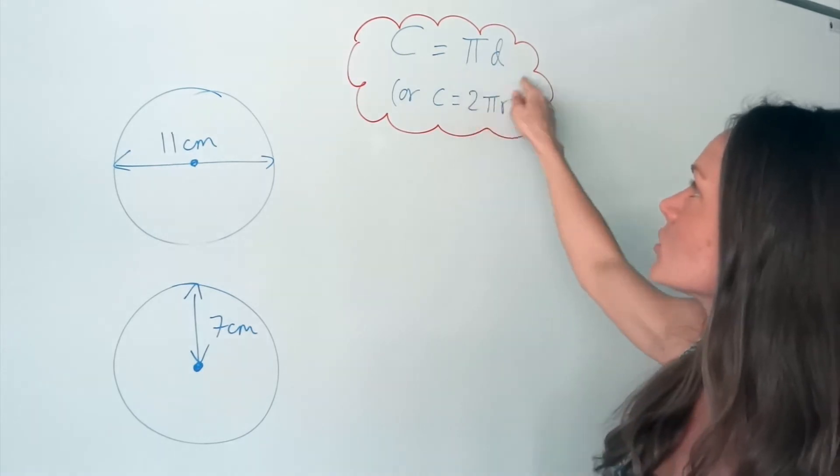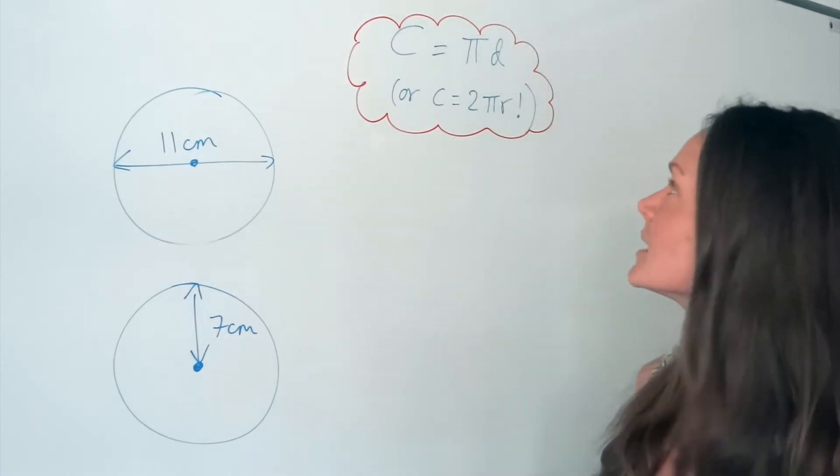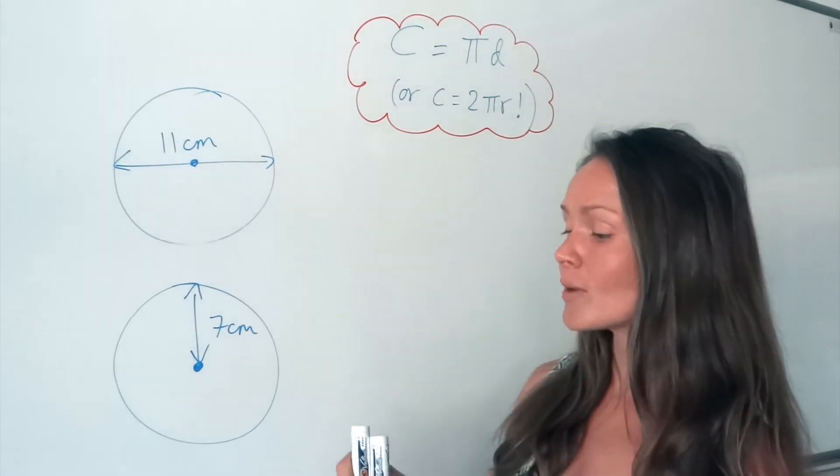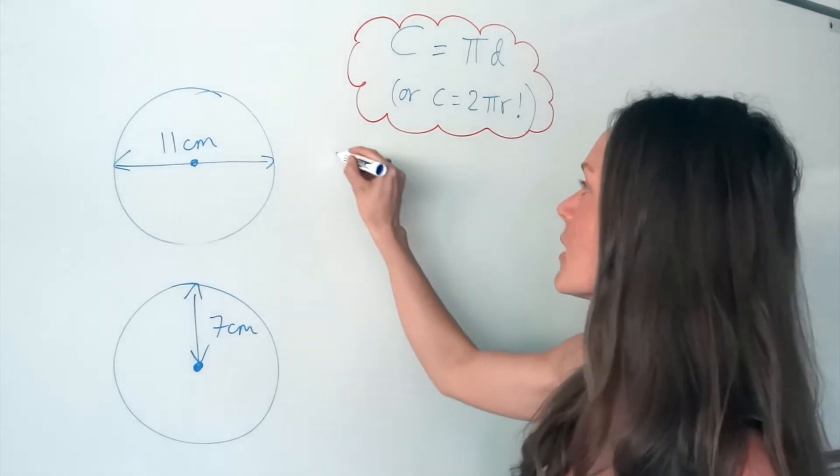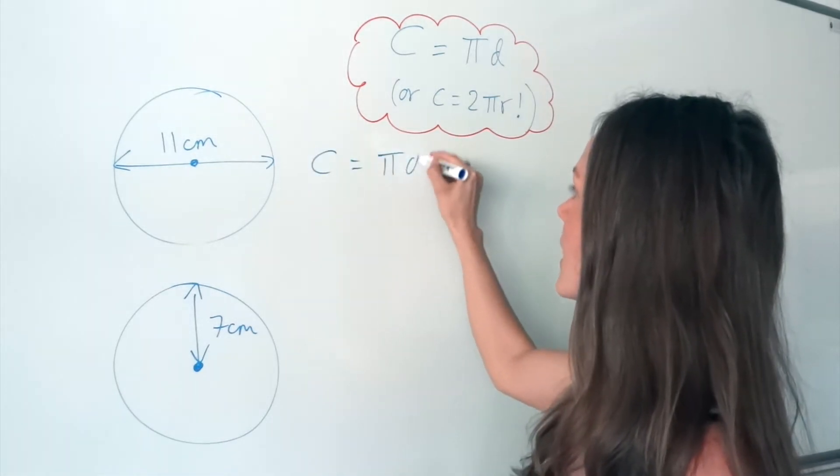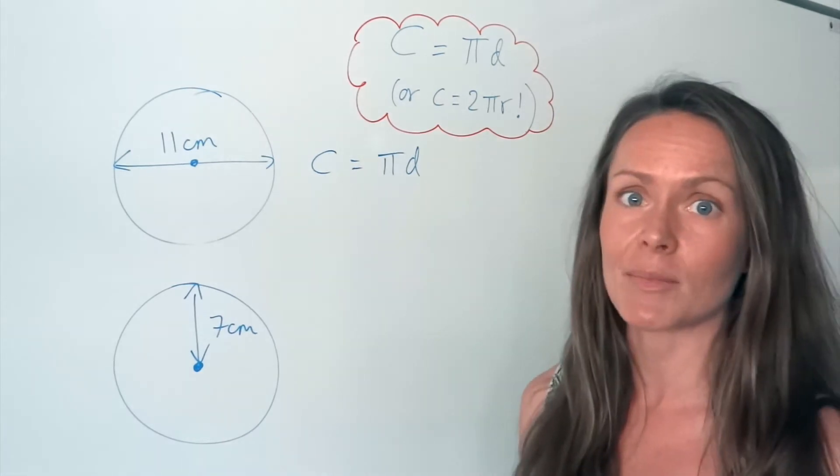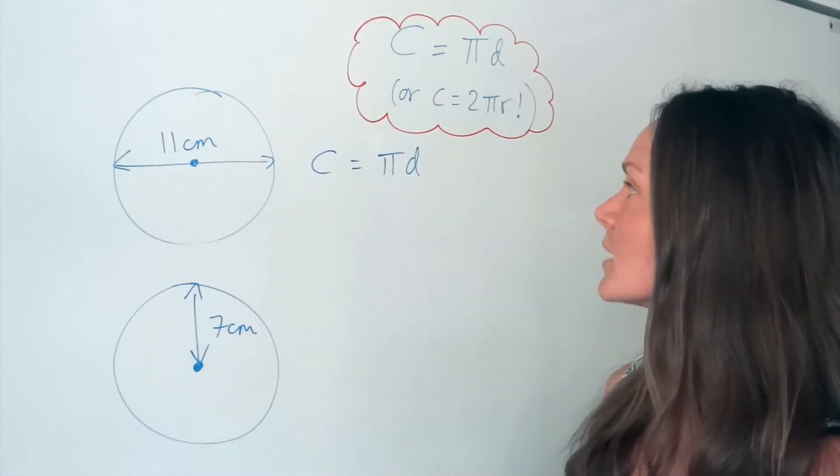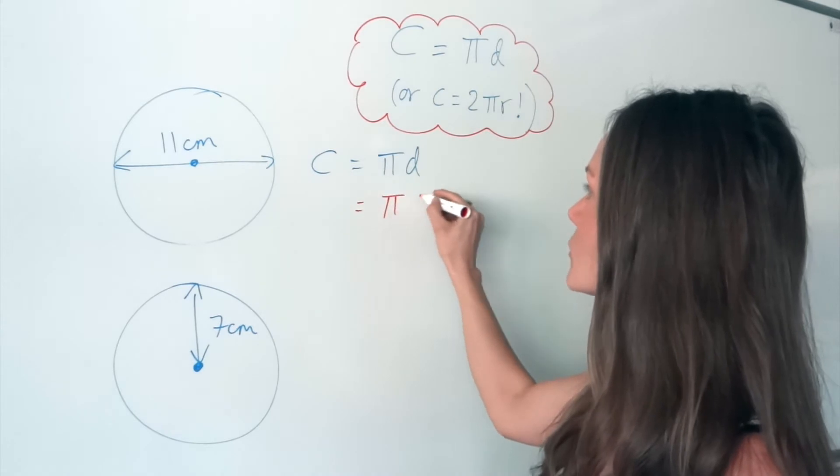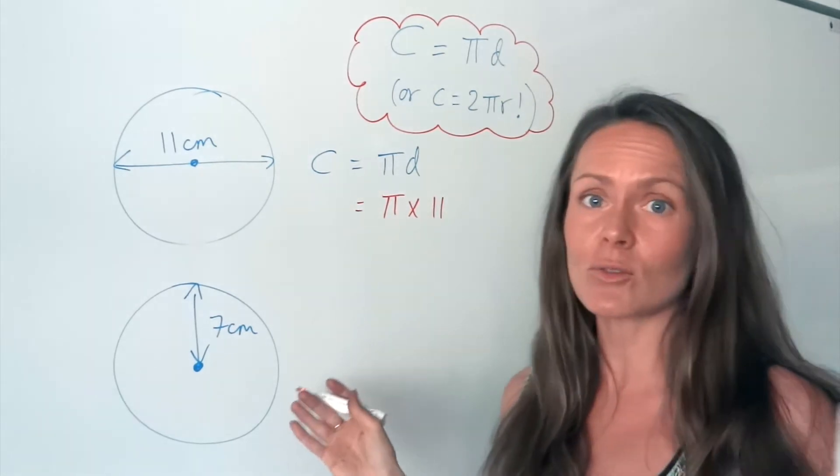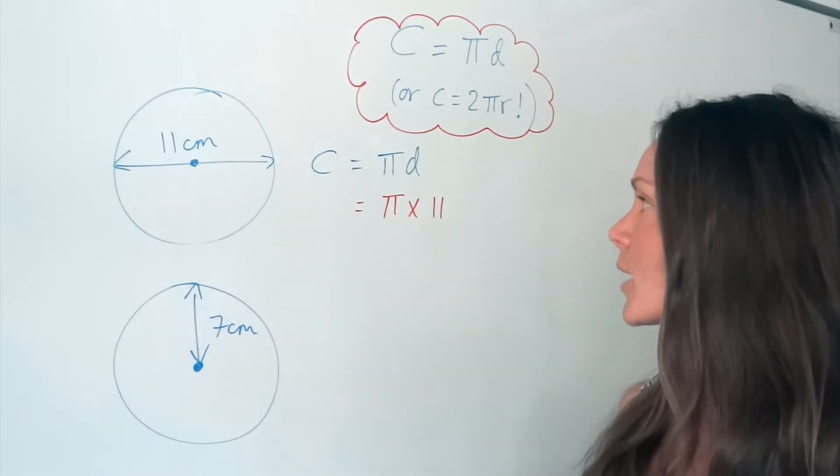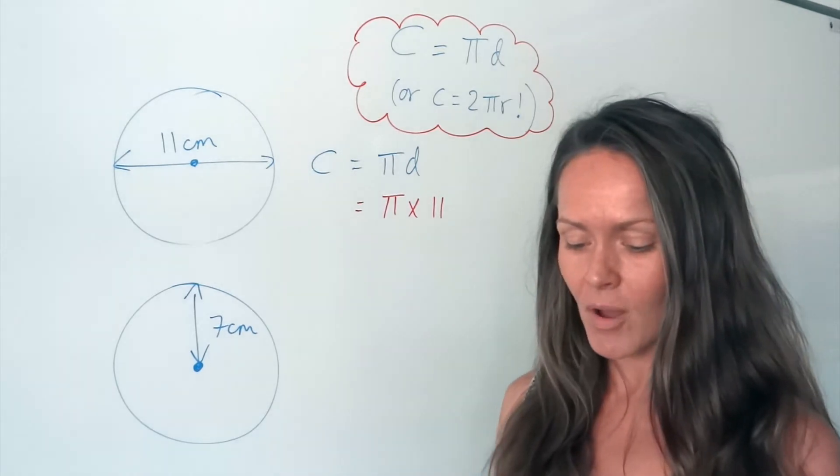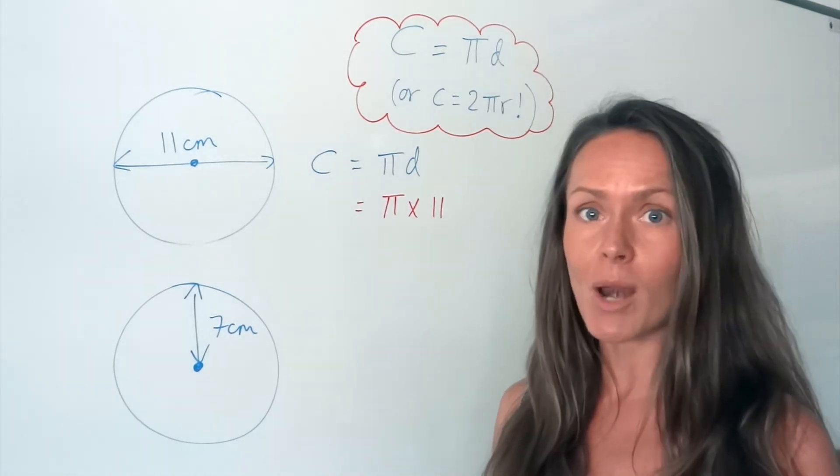But for these examples, I'm just going to refer to the top equation, c equals pi d. So in the first example, I'm going to write down the formula, and I already know what the diameter is, so I'm just going to substitute that into the equation. So pi multiplied by 11, and that's all you have to do. So put that in the calculator.